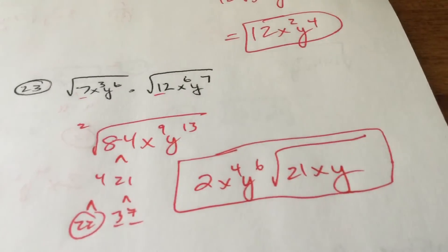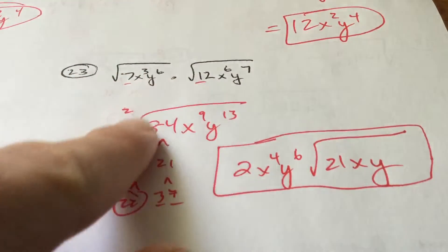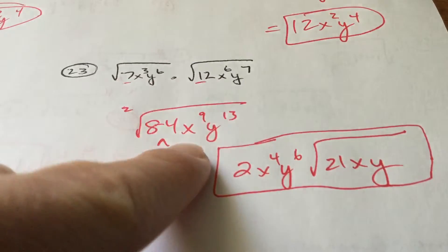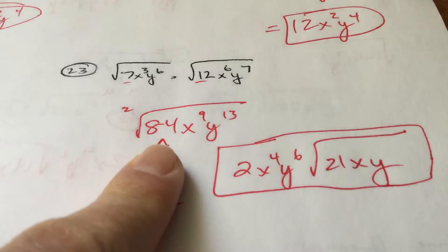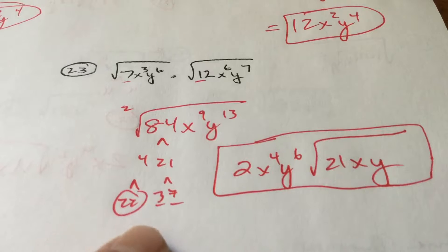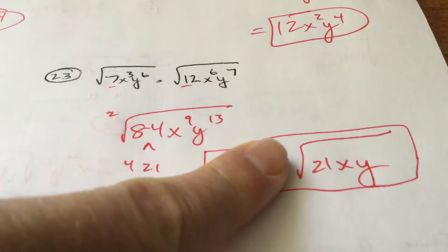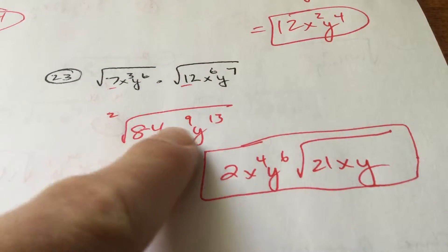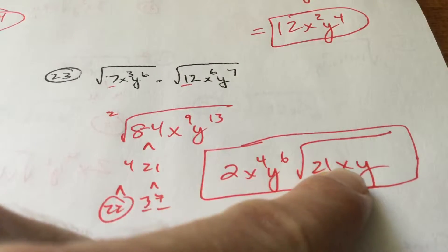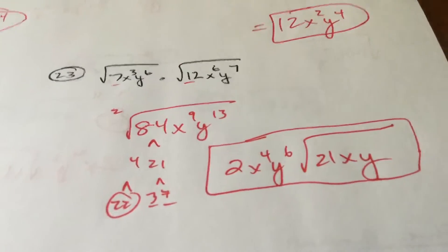Some things don't break out on number 23. Do 7 times 12, multiply the x's, multiply the y's. You're taking the second root of 84. 84 is 2 times 2, which breaks out; 7 times 3, which is 21, has to stay on the inside of the square root. 2 goes into 9 four times with 1 left over; 2 goes into 13 six times with 1 left over.